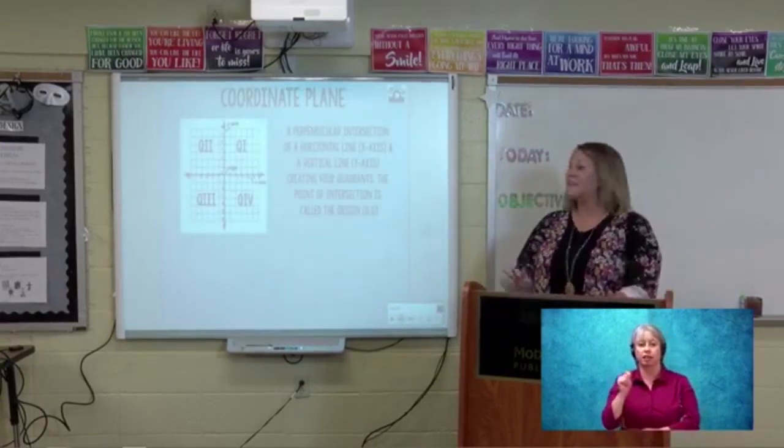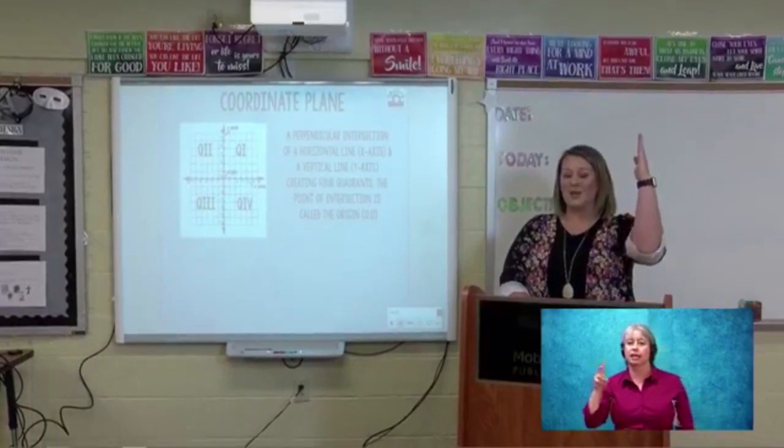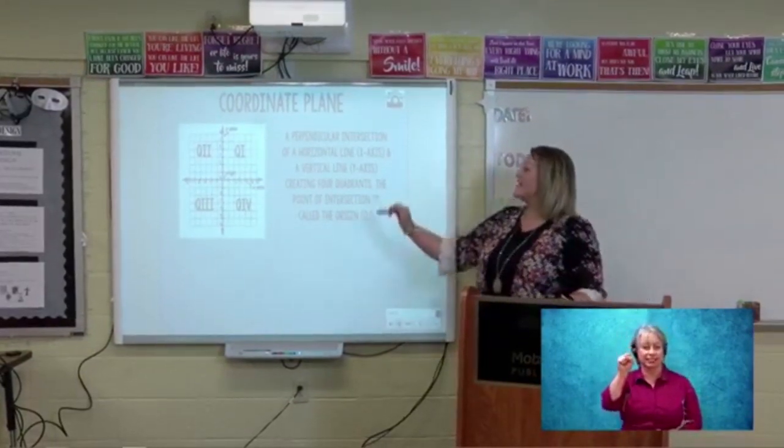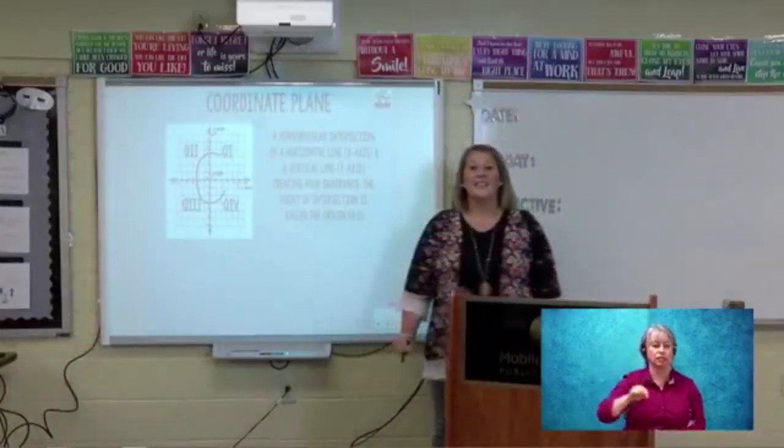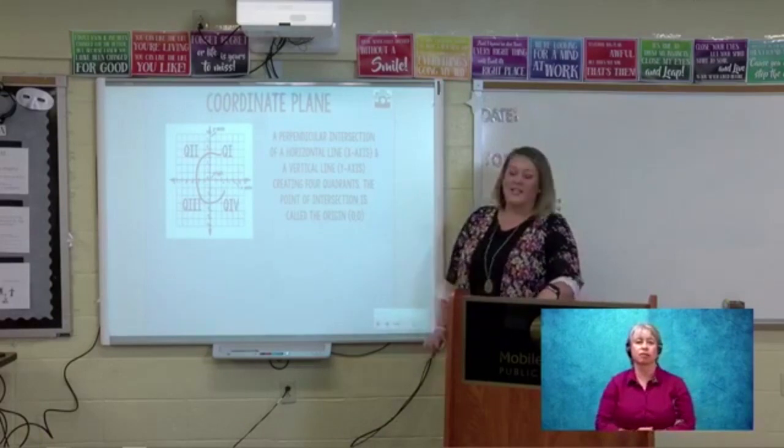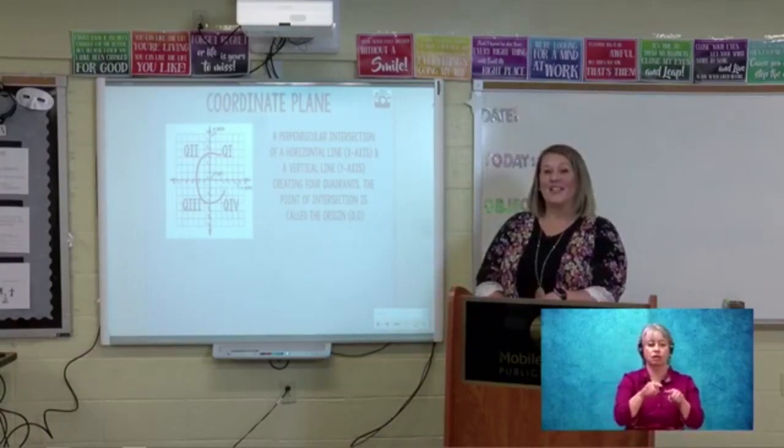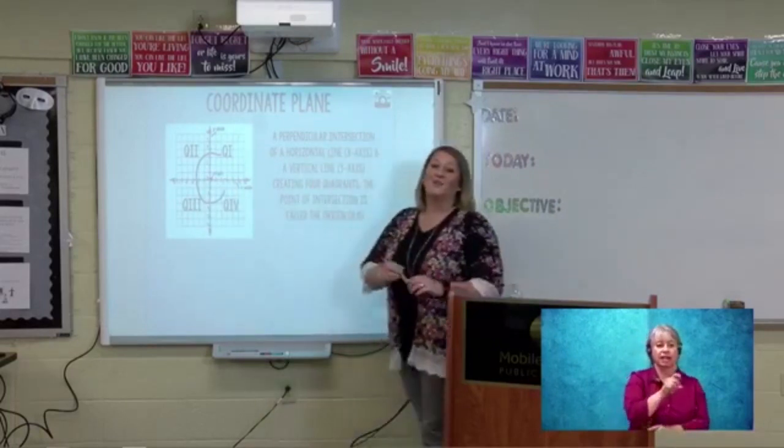The coordinate plane is a perpendicular intersection of a horizontal line which we call the x-axis and a vertical line which we refer to as the y-axis. These axes create four different sections, and for math we call those quadrants. If you look here at the picture you will see the four quadrants: Quadrant 1, quadrant 2, quadrant 3, and quadrant 4. If you notice, if I go in a counterclockwise order, it creates a C, which is easy to remember for the coordinate plane. There is also a point of intersection in the middle of the two axes. That is called the origin, where the x and y values are both zero.